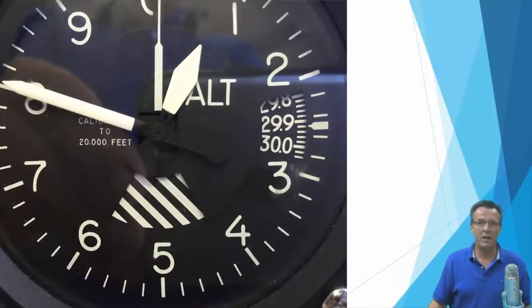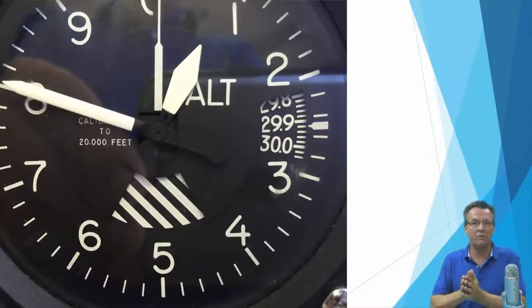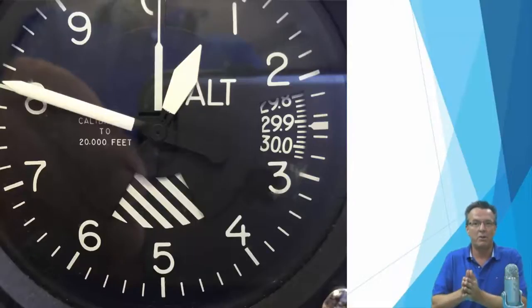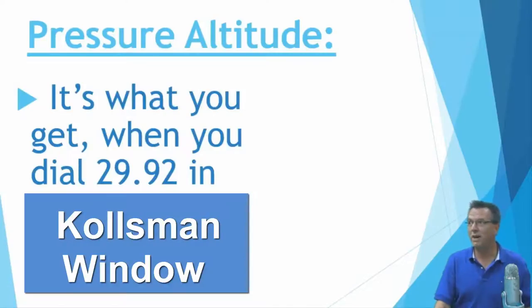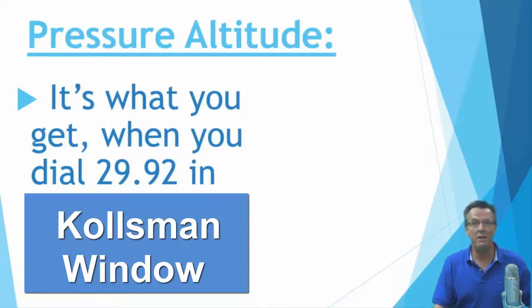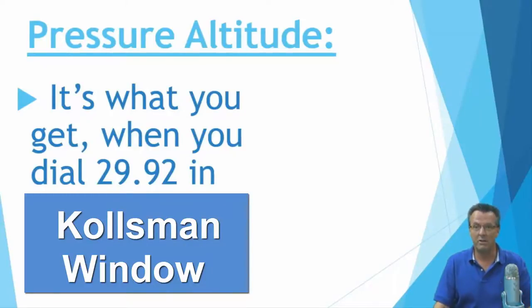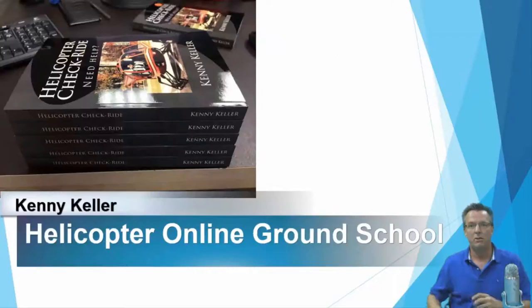So why do we care? We care because the aircraft is going to operate at the pressure altitude. We need the pressure altitude to work our performance charts. So remember: pressure altitude is what you get when you dial 29.92 in the Kohlsman window, and what you read directly from your altimeter is your pressure altitude.